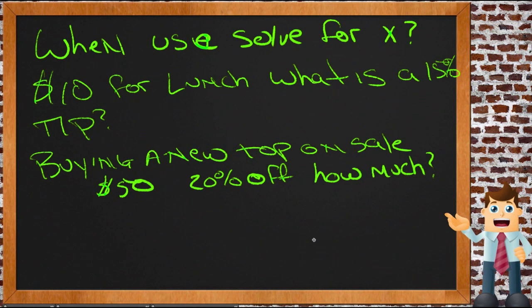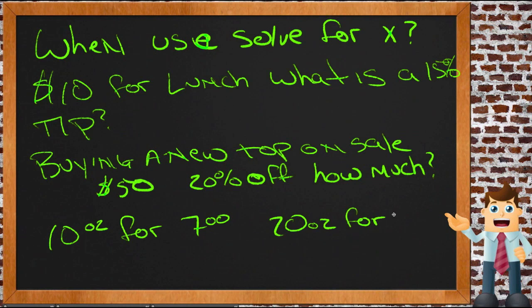When you're in the grocery store and you're buying cereal and you decide, should I buy the small box, which is 10 ounces for $7, or should I buy 20 ounces for $13.50? Which is a better deal and why? That's definitely solving for x.